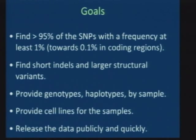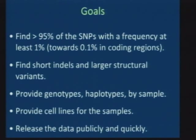Importantly, it's a project that doesn't just aim to find the SNPs, but also to find all types of genetic variation. We believe they're all potentially important in disease. So we want to find both the shorter insertion and deletion polymorphisms, and the larger, more complicated structural variants that can have quite dramatic effects on genes.